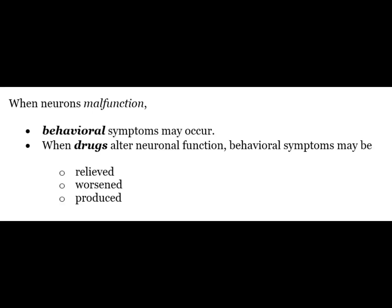Communication is anterograde from the exon of the first neuron to the dendrite, soma or exon of the second neuron. When these neurons malfunction, behavioral symptoms may occur, and when drugs alter the neuronal function, behavioral symptoms may be relieved, worsened or even produced.